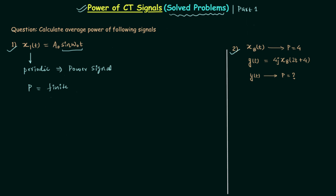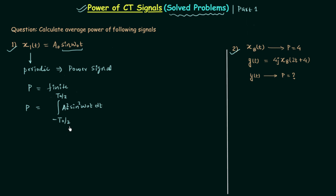Now let's calculate the average power using the formula for periodic signals. Average power P is equal to the integration from −T0/2 to T0/2 of |x1t|² dt, divided by T0. In place of x1t we write a0·sin(ω0t), so the integrand becomes a0²·sin²(ω0t). T0 is the fundamental time period, and we divide by T0 to find the average.